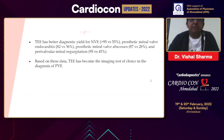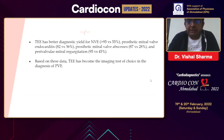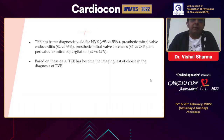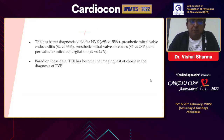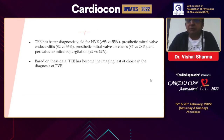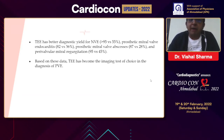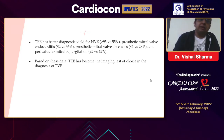Transesophageal ECHO has better diagnostic yield not only for native valve endocarditis but also for prosthetic mitral valve endocarditis, prosthetic mitral valve abscesses, and perivalvular mitral regurgitation due to infection of the mitral valve prosthesis. Based on these data, TEE has now become the imaging test of choice in all patients suspected to have endocarditis involving the prosthetic heart valve.